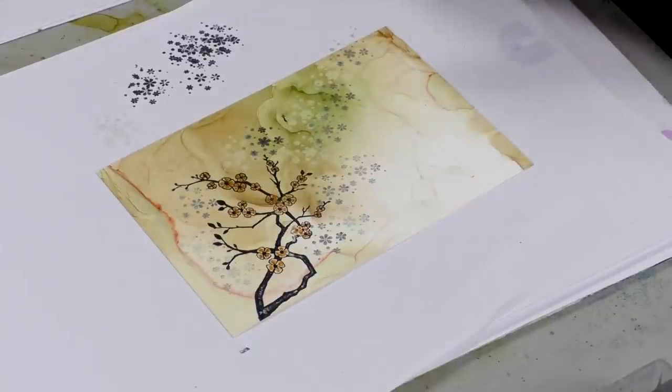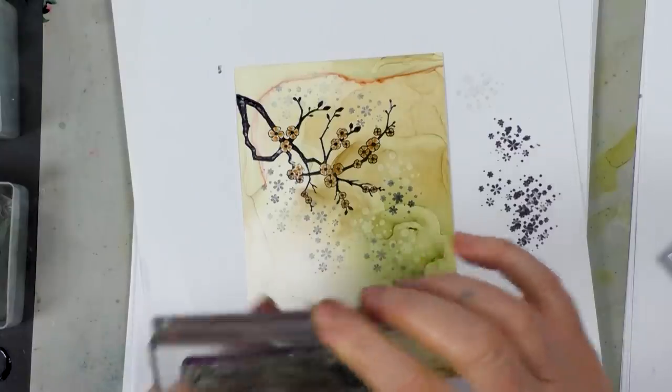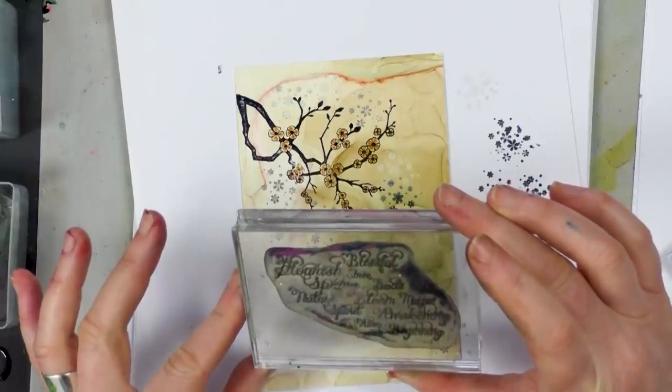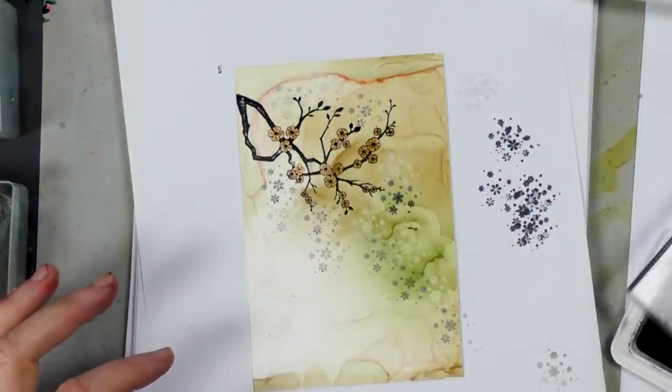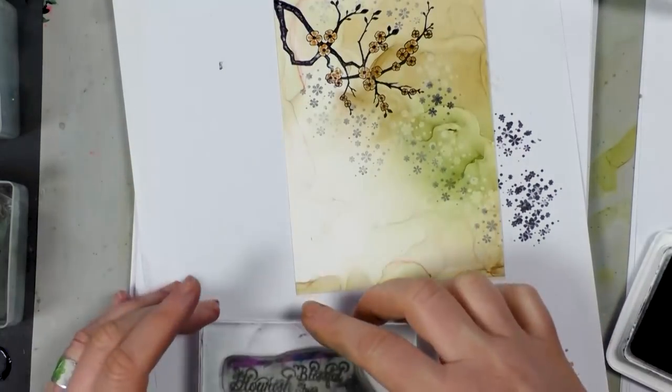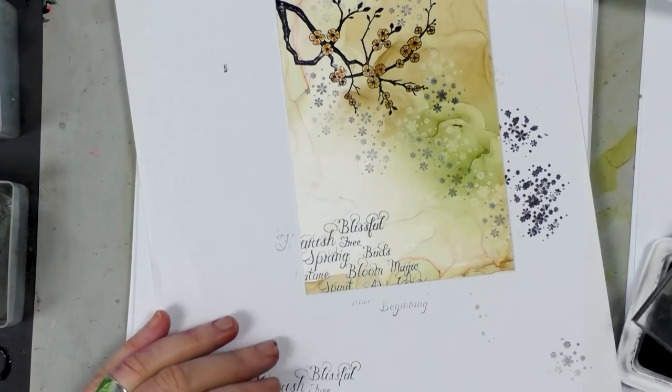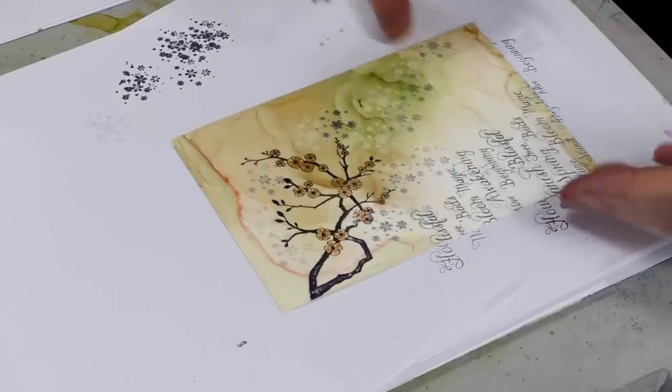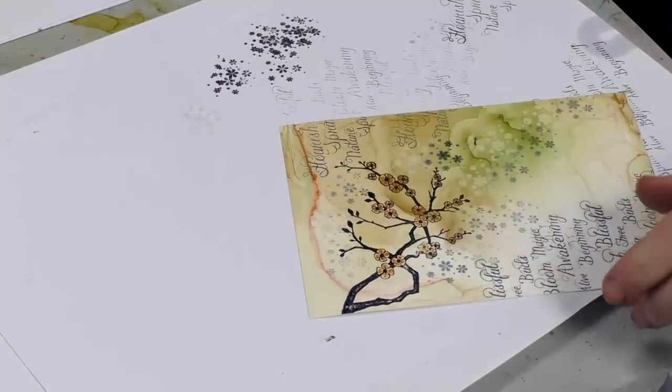Okay, so down here I'm going to ink up one of our worded stamps. This is a really nice spring stamp. We've got Blissful, Flourish, Free, Spring, Buds, Nocturne, Blue, Spirit, Awakening, Alive, Beginning, Nature. Okay, so inking up in the archival, I'm going to stamp off and then pop that down. And I think I'll just do one just in the corner up here like so.